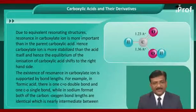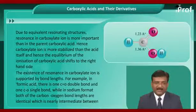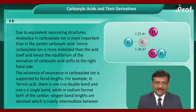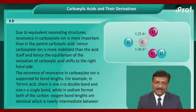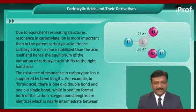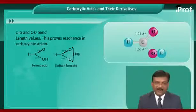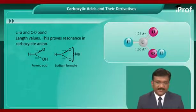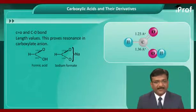The existence of resonance in the carboxylate ion is supported by bond lengths. For example, in formic acid, there is one C=O double bond and one C-O single bond. While in sodium formate, both carbon-oxygen bond lengths are identical, which is nearly intermediate between the C=O and C-O length values. This proves resonance in the carboxylate anion.